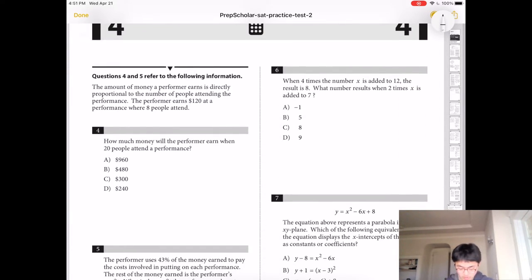Number 4, how much money will the performer earn when 20 people attend their performance? So they get 120 per 8, so it's $15 per person. Times 20, which is 300. So the answer is C, 300.